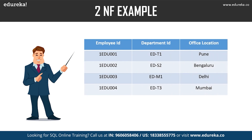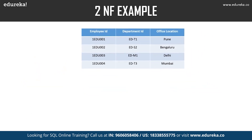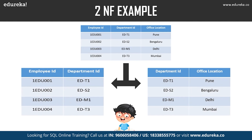To understand second normal form, consider a table with a composite primary key of employee ID and department ID, and a non-key attribute of office location. Office location only depends on department ID, which is only part of the primary key. Therefore, this table does not satisfy second normal form. The solution is to split the table accordingly.